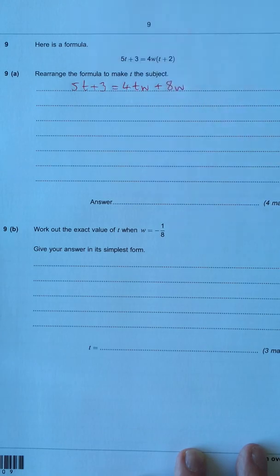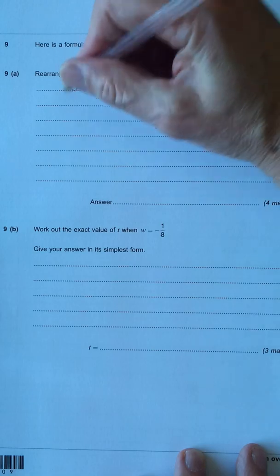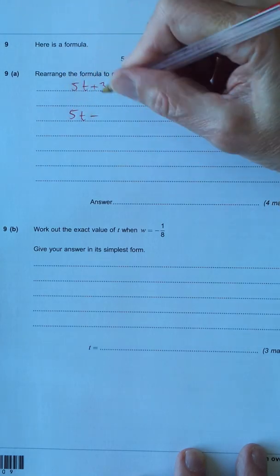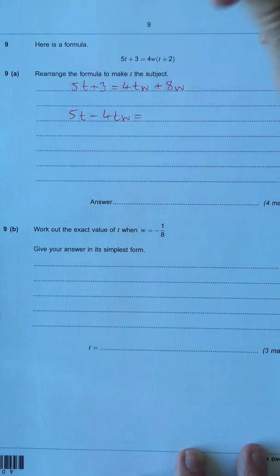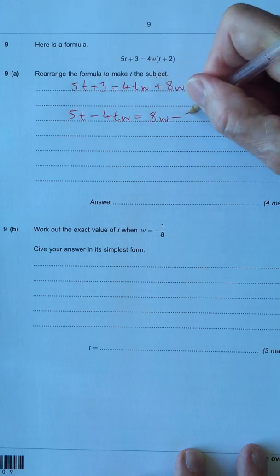Now let's get the t's on the same side of the equals sign. So I'll take the 4tw over. So I've got 5t take away 4tw equals, let's take the 3 over. So I've got 8w minus 3.